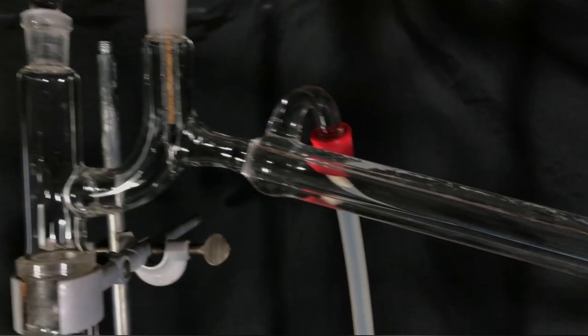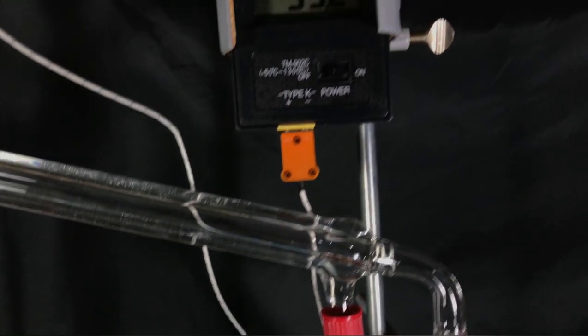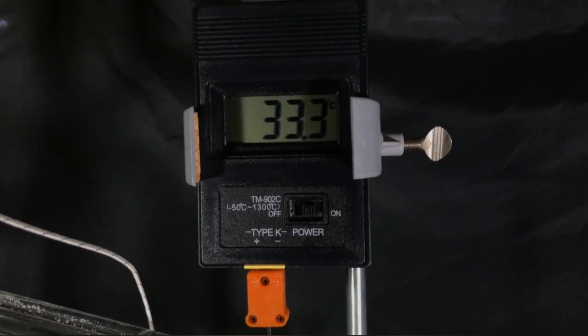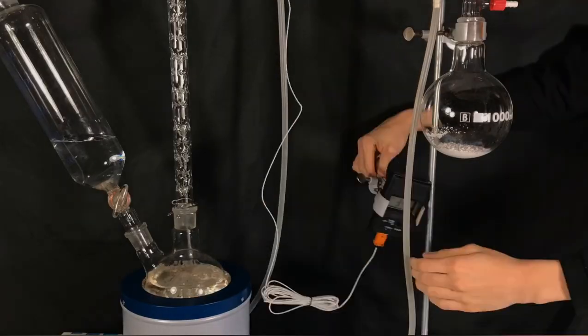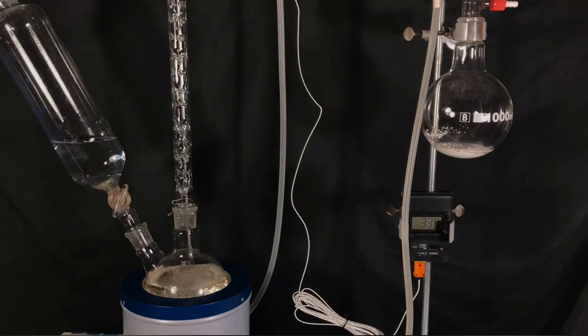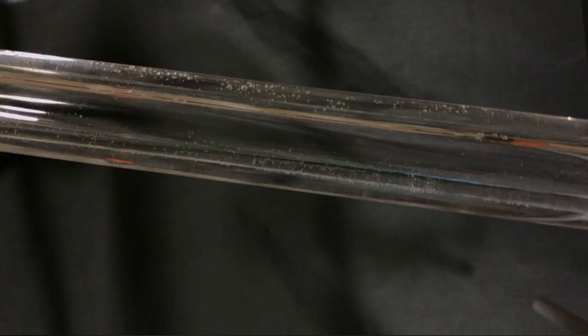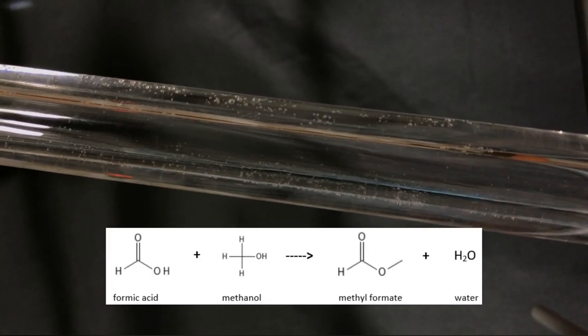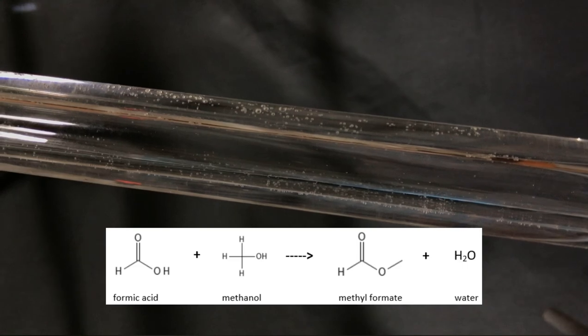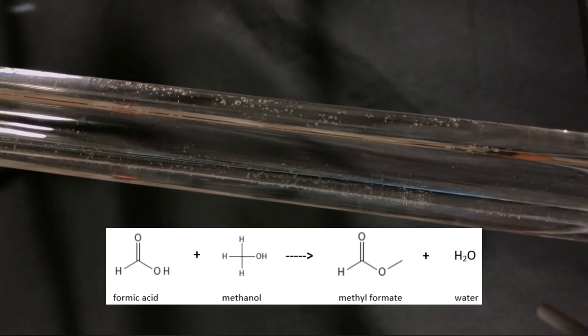The thermocouple measured a temperature of 33 degrees Celsius. This is near the boiling point of methyl formate which is 32 degrees Celsius. The reaction taking place is known as an esterification reaction. What is happening can be seen here: the formic acid reacts with the methanol to form methyl formate and water.